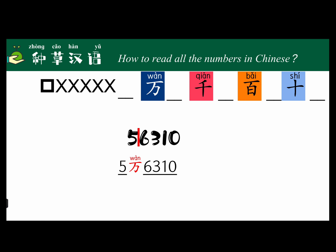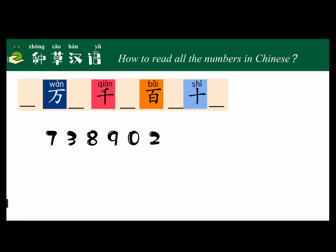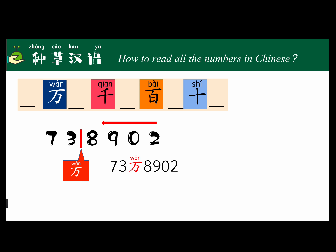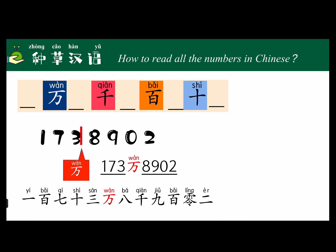For example, 37,893 — counting from back to front, four digits as a unit, we draw a comma to separate the units. So we read it as 三万七千八百九十三 (sān wàn qī qiān bā bǎi jiǔ shí sān). Another example: 1,738,902 is read as 一百七十三万八千九百零二 (yī bǎi qī shí sān wàn bā qiān jiǔ bǎi líng èr).